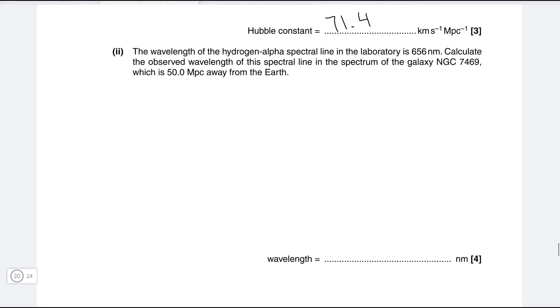Okay part two. The wavelength of the hydrogen alpha spectral line in the lab is 656 nanometers. Calculate the observed wavelength of this spectral line in the spectrum of another galaxy which is 50 megaparsecs away from the earth. Okay well this is a Doppler shift question so the formula for that is that our change in wavelength divided by our wavelength measured in the lab is about equal to the recession speed divided by the speed of light. Now what we're really interested in is our fractional change in wavelength because we already know that our lambda is 656 nanometers so this here is our lambda.